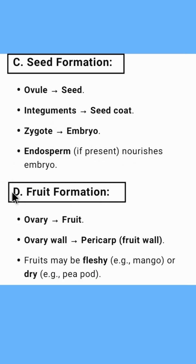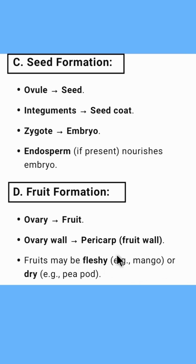The next process is fruit formation. The ovary is converted to the fruit. The ovary wall is converted to the fruit wall, which is called the pericarp. Fruits may be fleshy, for example mango, or dry, for example peapod.